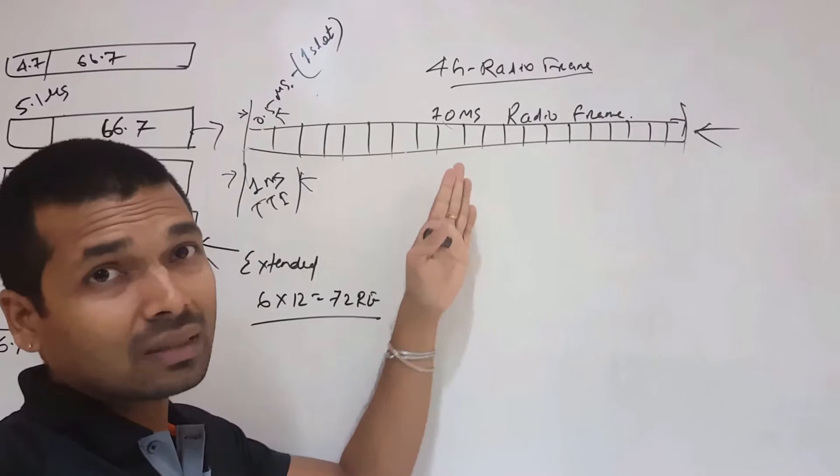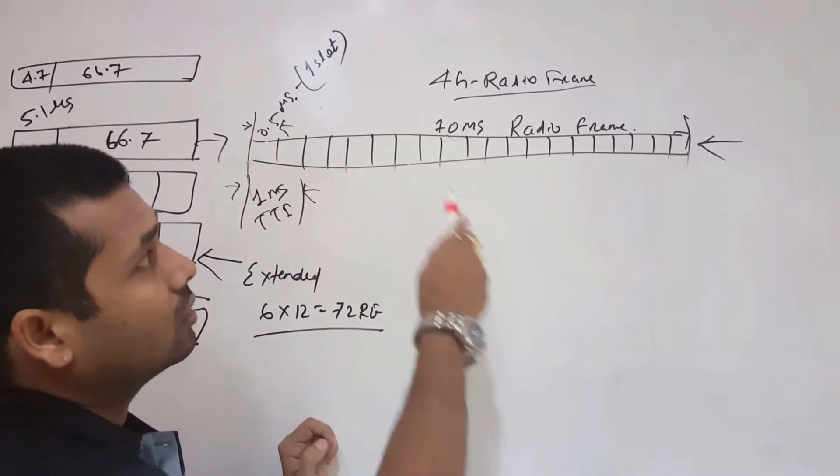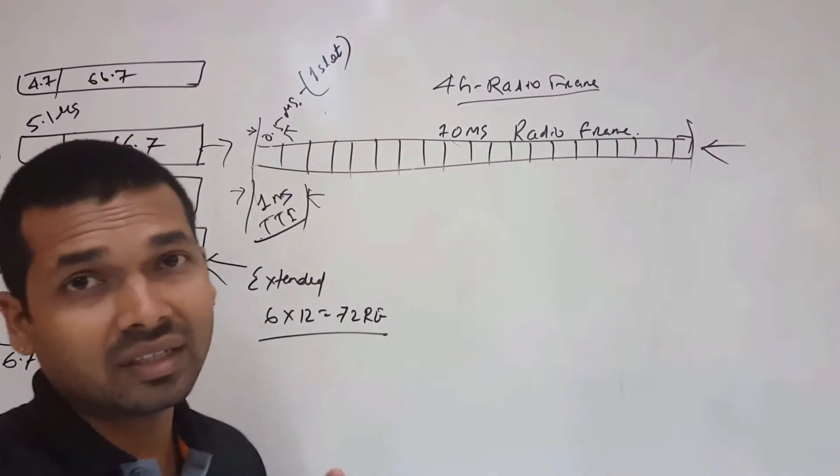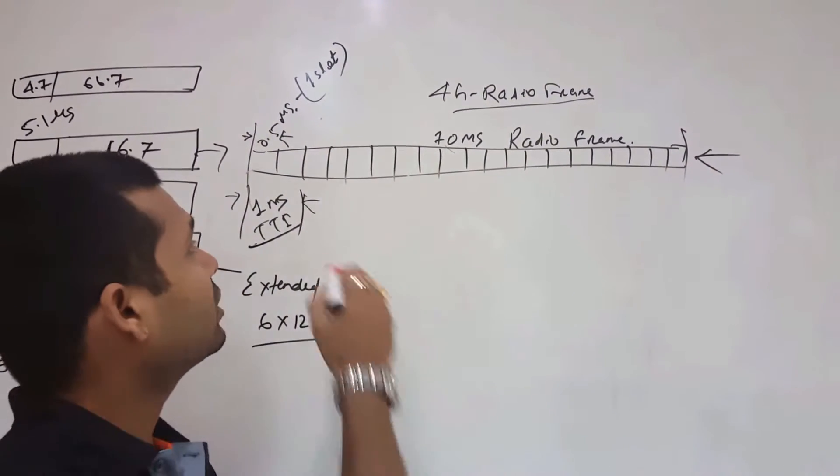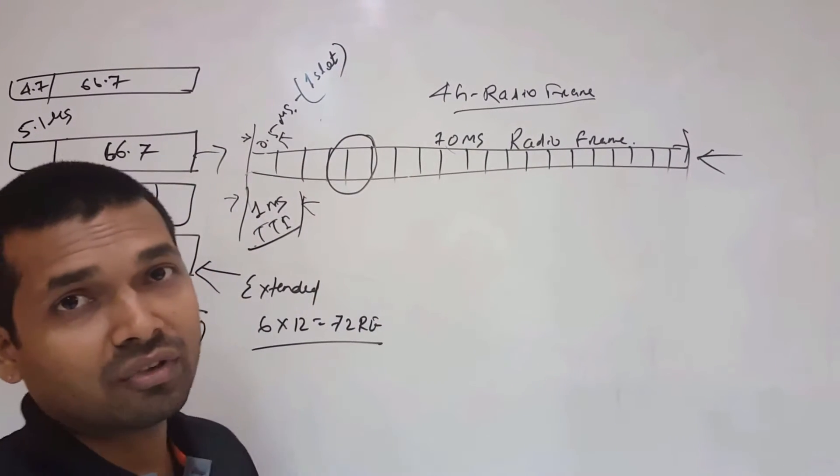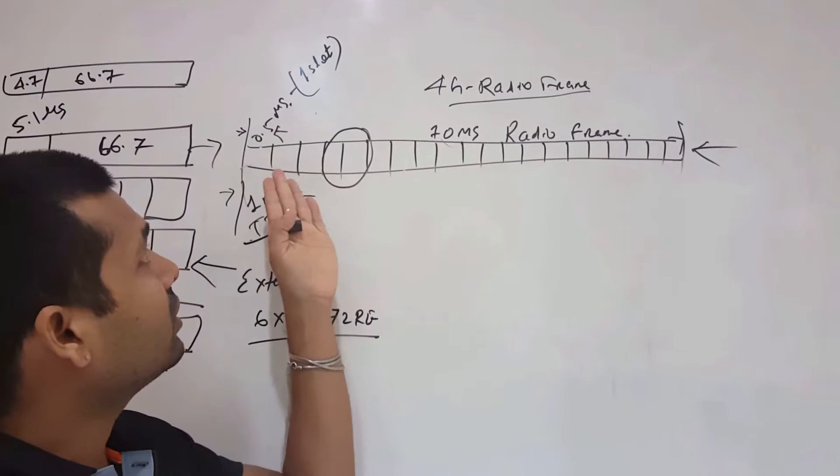One radio frame is 10 ms long, and 1 ms is our TTI in LTE, the transmission time interval. So every 1 ms we transmit and retransmit. Then we are having two slots in every 1 ms, so it is divided into 0.5 ms in each slot.